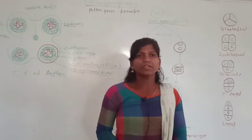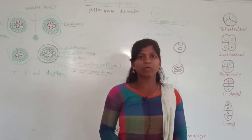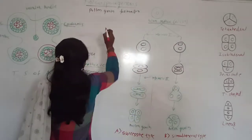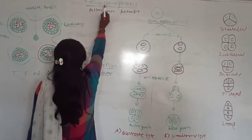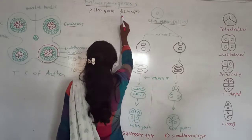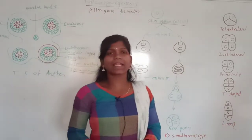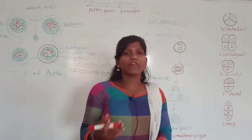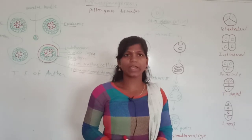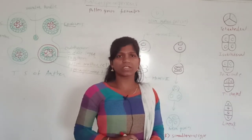Hello dear students, today we will see about microsporogenesis. What is microsporogenesis? Microspore means pollen grain and genesis means formation. So, how are pollen grains formed from the sporogenous tissue? That process is called microsporogenesis.